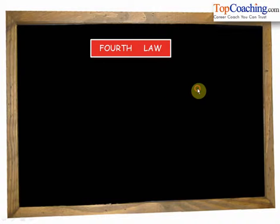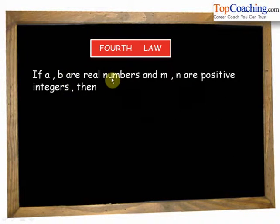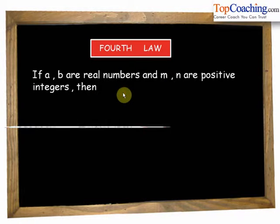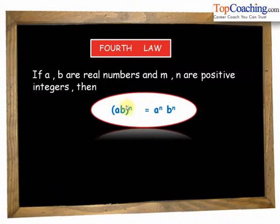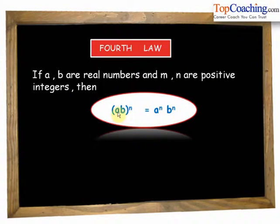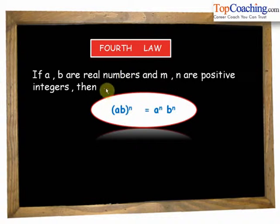The fourth law says that if a and b are real numbers and n is a positive integer, then ab to the power of n equals a to the power of n into b to the power of n. If we have any two numbers ab and take the exponent n of their product, they can individually be written as a to the power of n into b to the power of n.